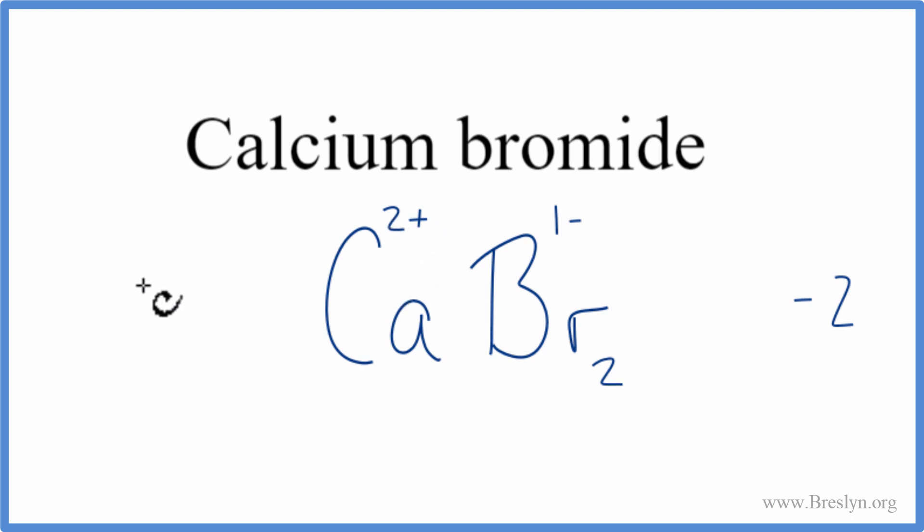And then the 1 times the 2 plus, that's plus 2. Plus 2 and minus 2, they cancel out and give us a net charge of 0. So this is the correct formula for calcium bromide. And this is Dr. B. Thanks for watching.